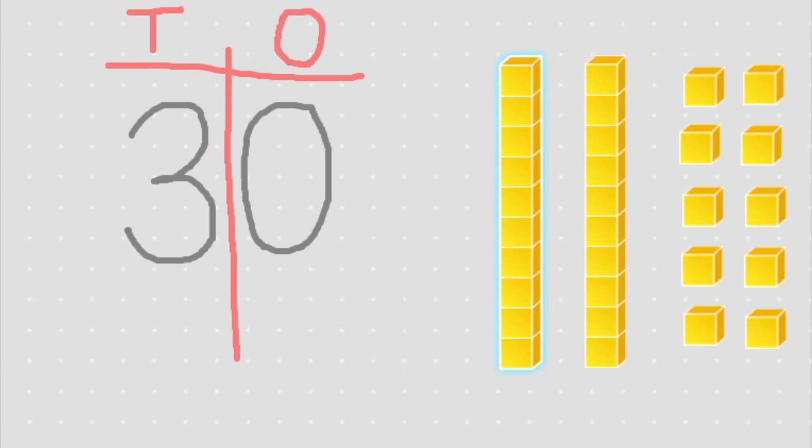If we draw our tens and ones chart, let's see which number is in the tens and which number is in the ones. The number 30 has a three in the tens and a zero in the ones place. Are you thinking what I'm thinking? There's a three in the tens, but I only see two longs here. Do you know why?